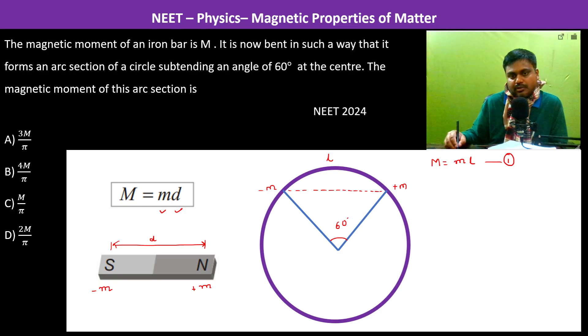This is l dash. Now you see this is the radius, this is the radius, this is 60 degrees, and this is an isosceles triangle. So therefore both the other angles must be equal, which is again 60 degrees, which makes it an equilateral triangle. So if this is r, this is r, then l dash also becomes r.